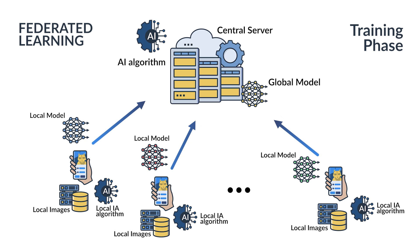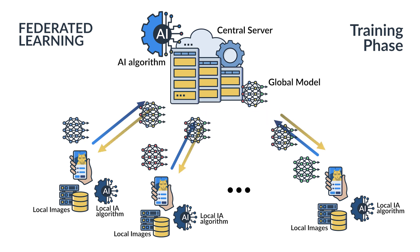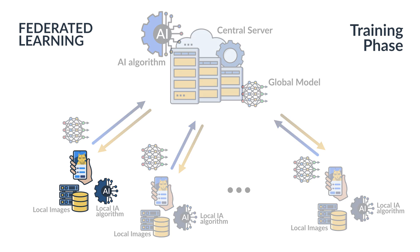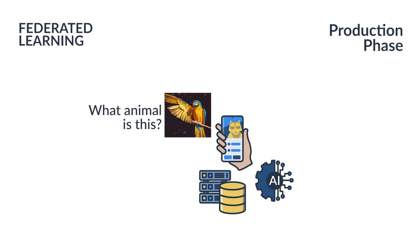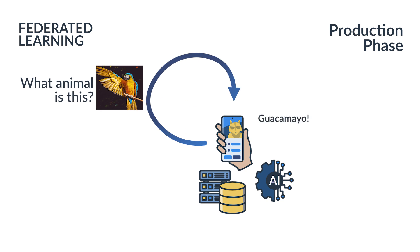The central element receives all the local models from all the devices and composes a global model that combines the knowledge from all of them. This global model, built with the knowledge gathered from all the devices, is then sent back to each mobile phone to be used instead of the local one. After this training phase, when a device wants to know what kind of animal is shown in a local picture, it only needs to query the local algorithm to obtain the answer. Consequently, the algorithm was trained with global knowledge, but it runs locally.